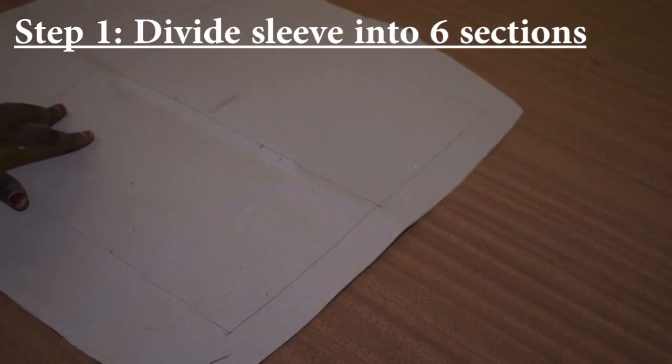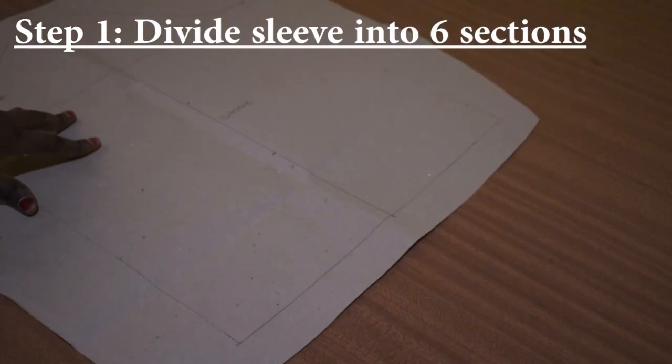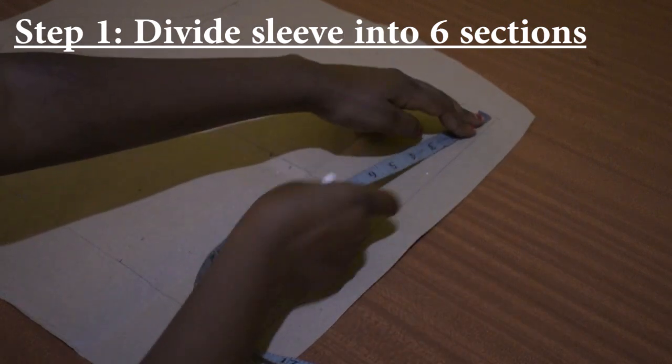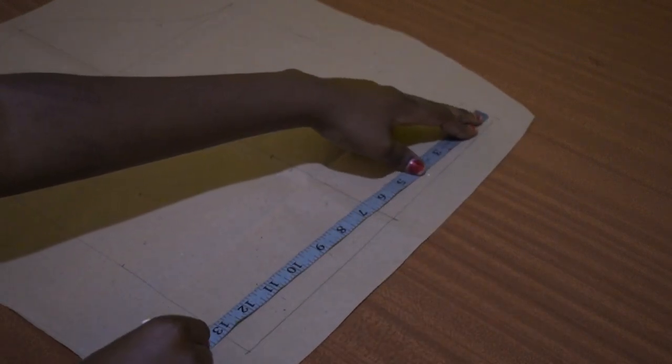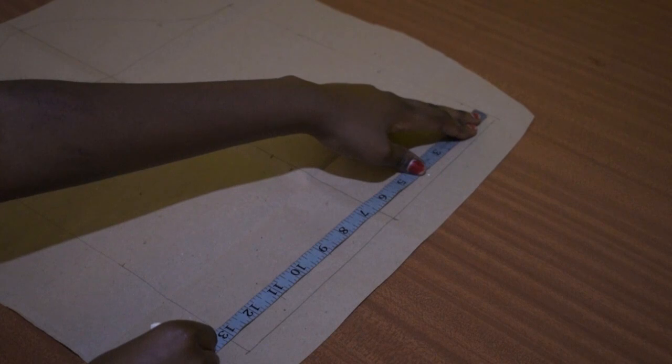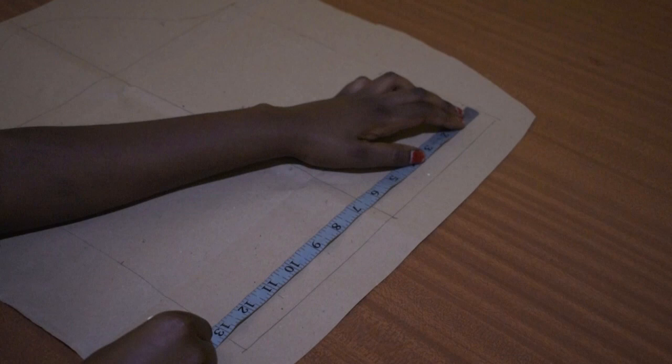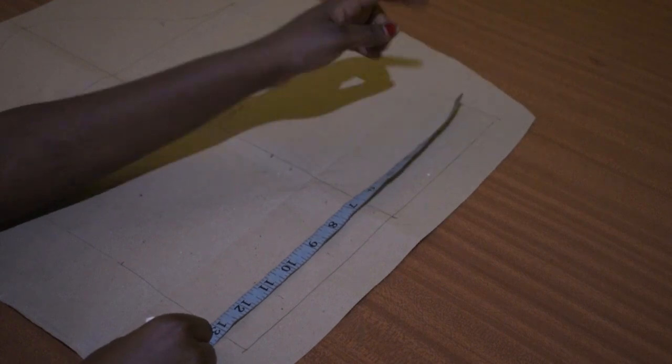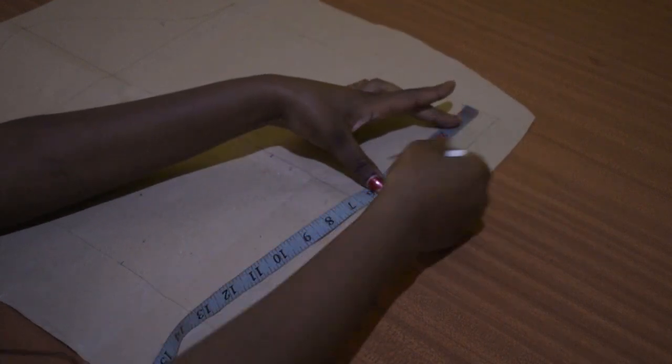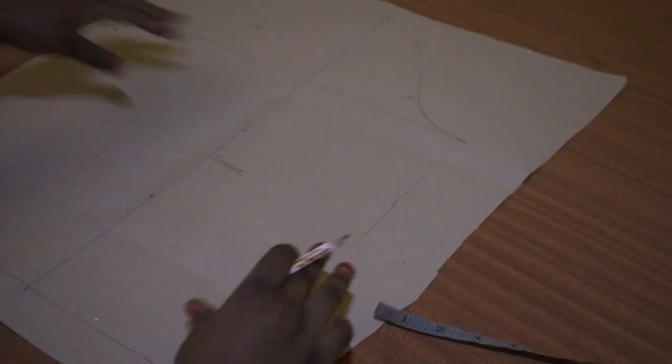So let's start. In order to divide into six sections, I measure from here to here. I get that in point one inches there. I divide that by six to get the measurement. So for me I got 2.1 and I just marked here and here so that I'm able to join.